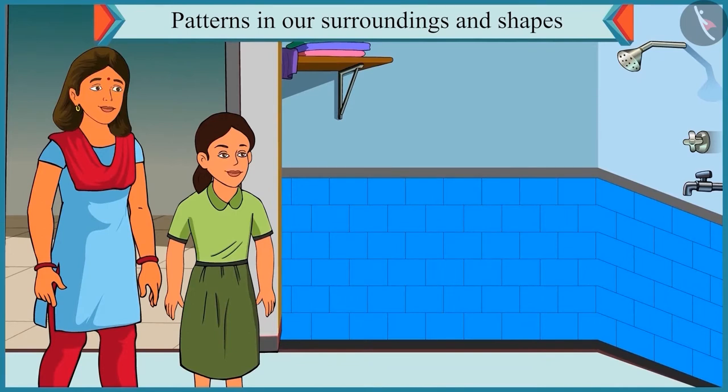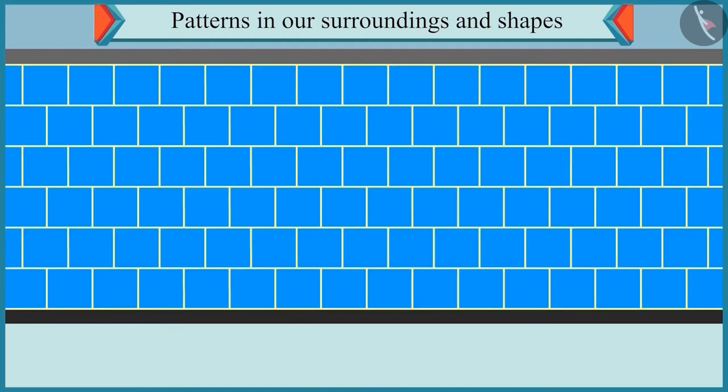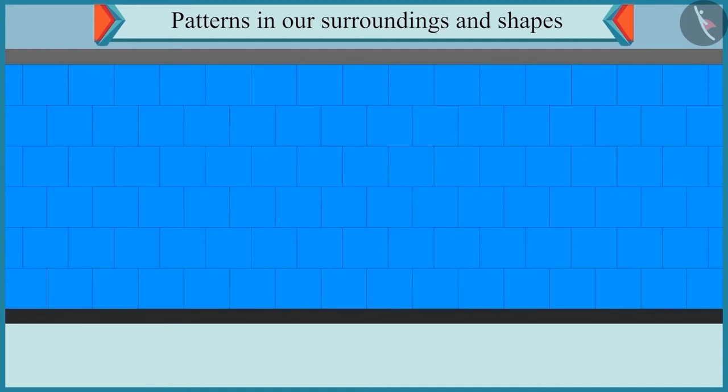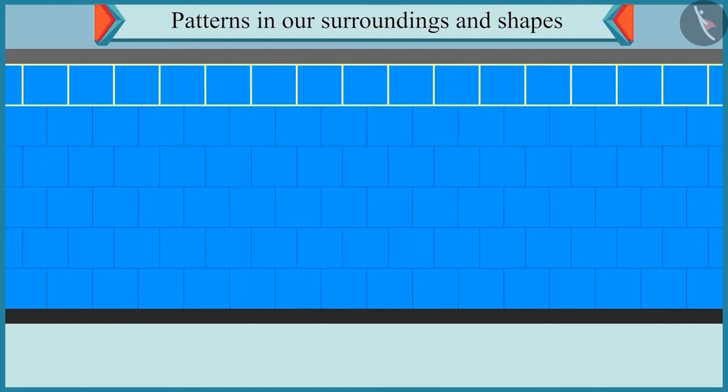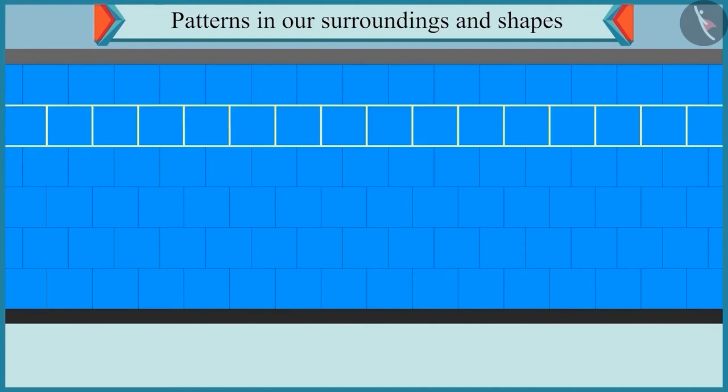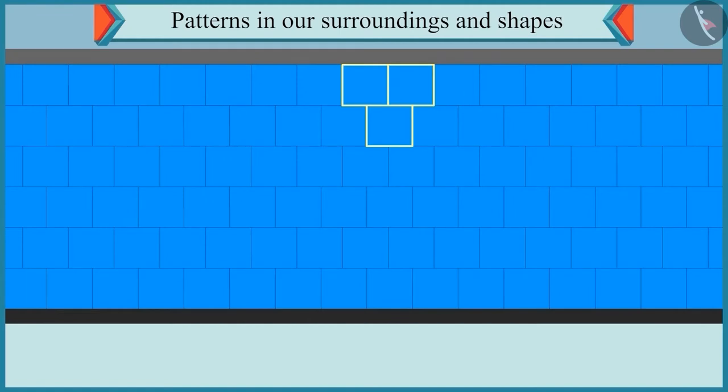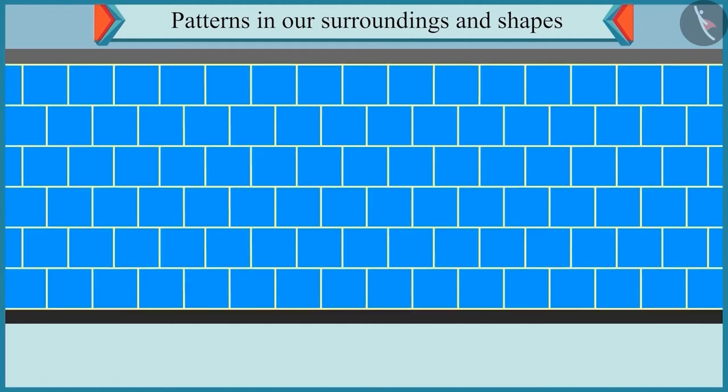Chutki, the tiles are stuck properly. Look, a pattern is made in the tiles by sticking them in this manner. Oh yes. Here in the first row, the tiles are laid in a uniform manner. And in the second row, the tiles are placed in between two tiles above it. And this pattern is repeated again and again.